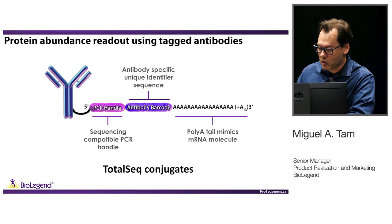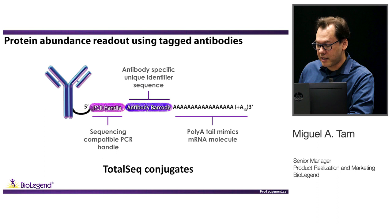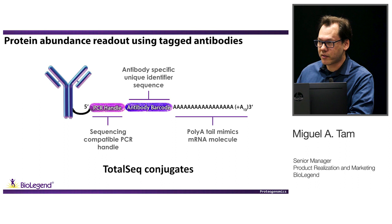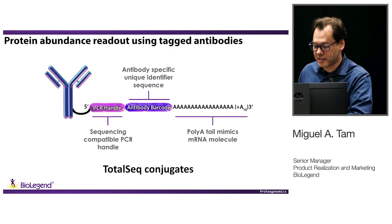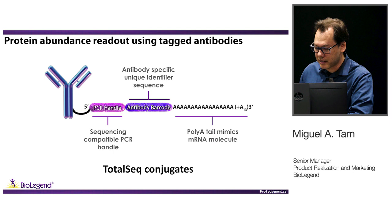In reality, this barcode is a translation of the specificity of the antibody. If the antibody recognizes the CD3 molecule, whenever you pick up this barcode in your sequencing readout, that barcode tells you that you were detecting CD3 in that particular sample. The oligo also has a PCR handle, which makes the entire structure compatible with sequencing instruments such as Illumina sequencers. This is our TotalSeq reagent — our conjugate.